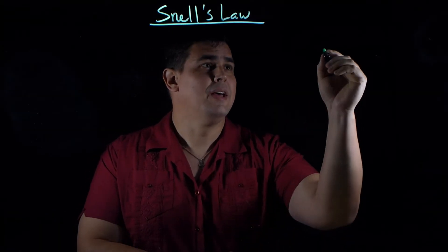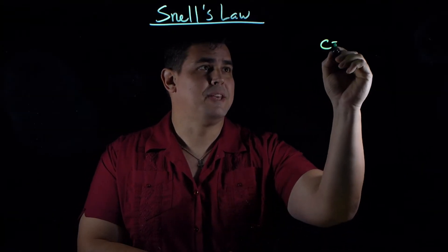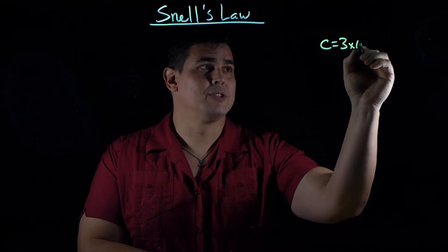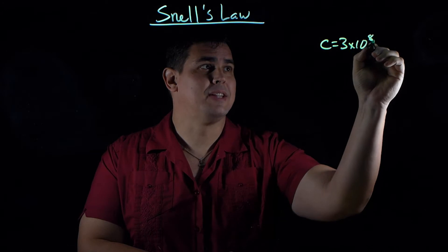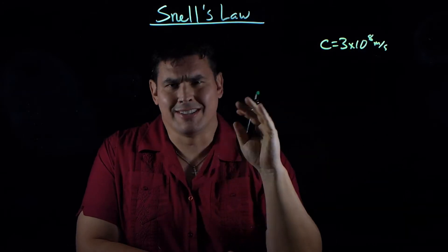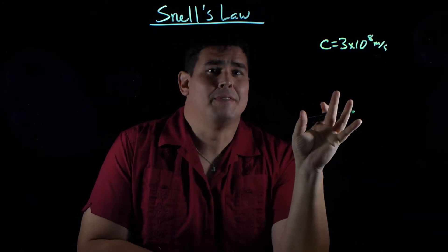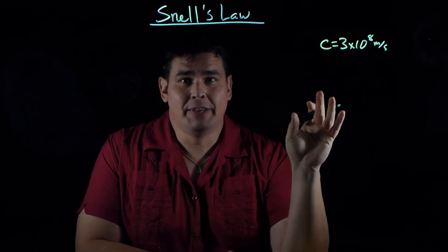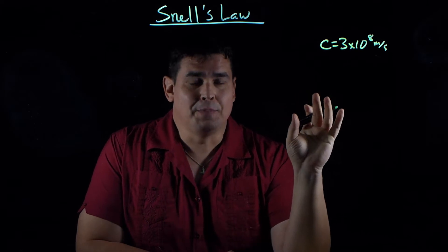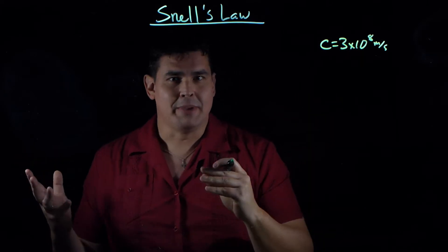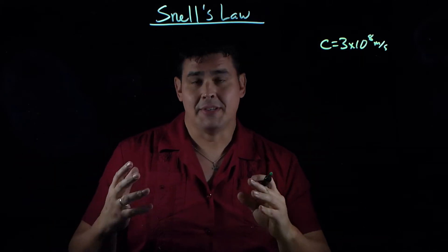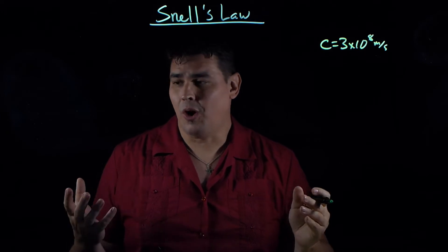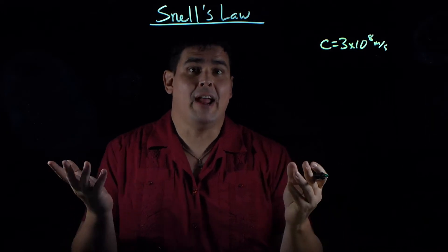We already know that the speed of light in a vacuum is 3 times 10 to the 8 meters per second. That's the upper speed limit of the universe. But this is light moving in a vacuum. What about light that's moving through some other medium, like a piece of glass, a piece of ice, some water, or even air?